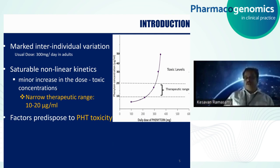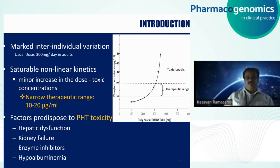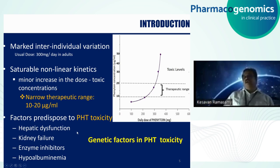Over the years, many factors have been identified — those having hepatic dysfunction, kidney failure, or taking co-administered drugs, and those with hypoalbuminemia may develop phenytoin toxicity. Anyone having these factors is likely to develop toxicity. But there are a few patients who, even in the absence of these factors, develop phenytoin toxicity. This leads to the speculation that genetic factors can cause phenytoin toxicity.